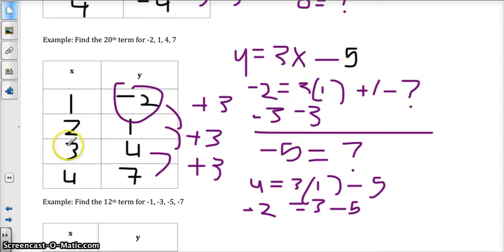So this should be 3x minus 5. 3 times 3 is 9, minus 4 is 5... minus 5 is 4, and then 3 times 4 is 12, minus 5 is 7. So our 20th term, we're going to take 3 times 20 minus 5, which is 60 minus 5, and our 20th term for that sequence will be 55.